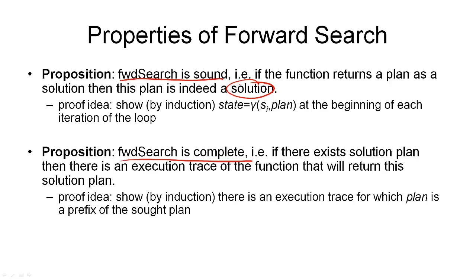The proof of soundness is very simple and can be shown by induction. We show that at the beginning of the loop, the state always equals gamma of SI and the current plan. This is true initially because the initial value of state is the initial state and the initial plan is empty — gamma applied to SI with the empty plan means we're still in the initial state. We can then show this condition is maintained through every iteration of the loop, which means it is also true for the final iteration before we return the plan. We return from the function when state satisfies the goal, so this plan must reach that state, and our algorithm is sound.